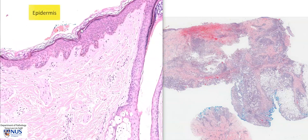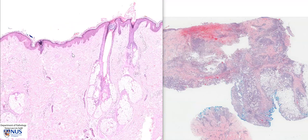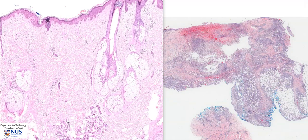On the surface, we have the epidermis, which is comprised of stratified squamous epithelium, which is keratinizing. So we have a few layers of keratinized material on the surface, and then below this, this whole pink layer is known as the dermis.